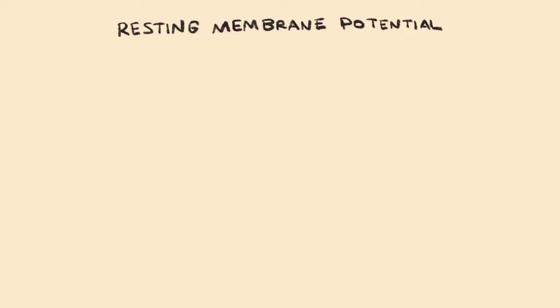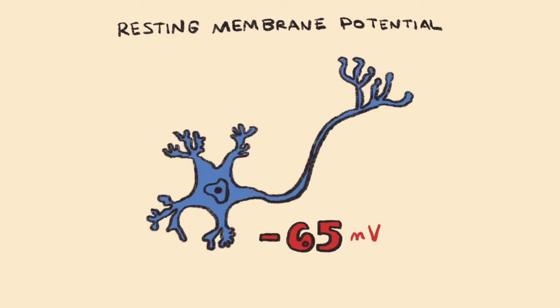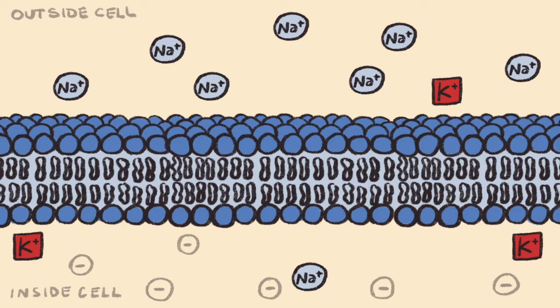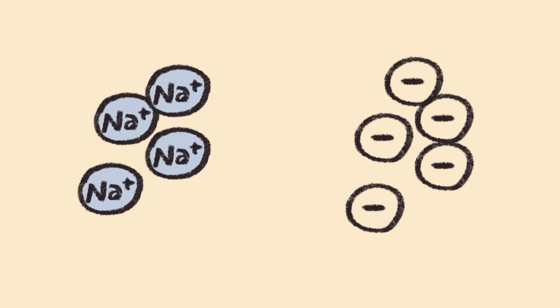Let's start with a neuron at rest and what that looks like. At rest, a neuron will have a resting membrane potential of approximately negative 65 millivolts. The charge inside the neuron is significantly more negative than outside the neuron. This is all through an unequal distribution of positively charged and negatively charged molecules.